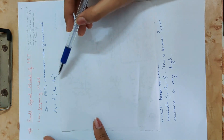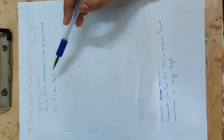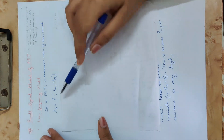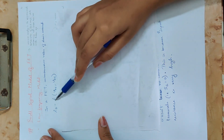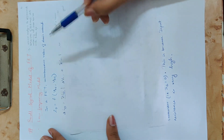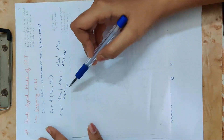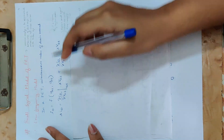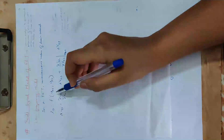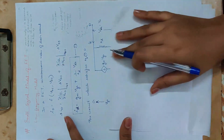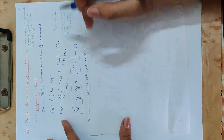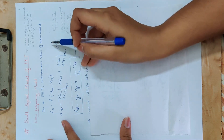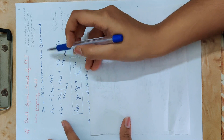If we use small letters for instantaneous values, then VDS is the same function of VGS and VDS. We can represent an equation. We can expand this using a Taylor series to examine these two terms.